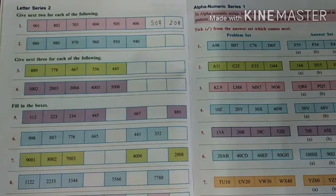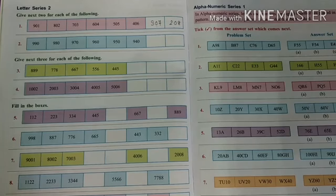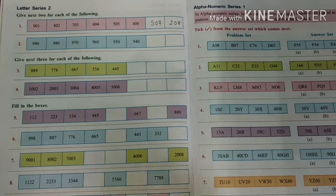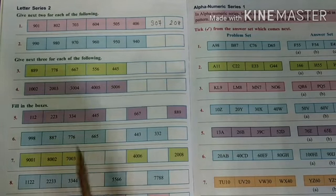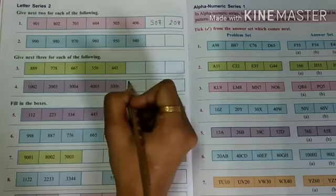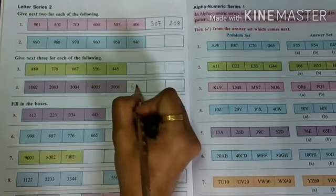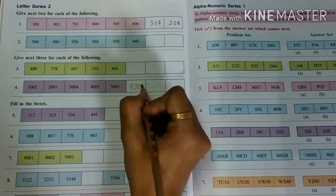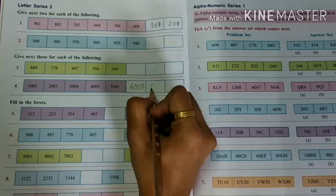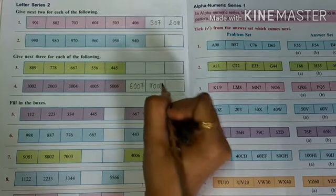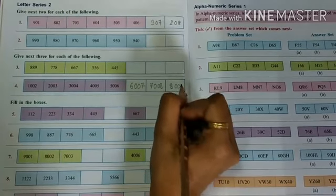Now see number 4 — you have to write the 3 next numbers. The series is: 1002, 2003, 3004, 4005, 5006. The first digit is increasing and the last digit is also increasing: 1, 2, 3, 4, 5. Then you write 6, the zeros remain constant. After 6 comes 7, so write 7, 00, 8; then 8, 00, 9.